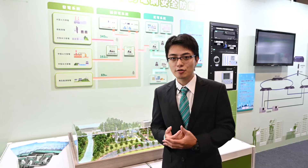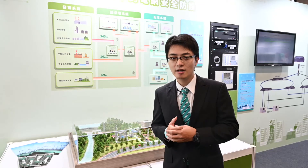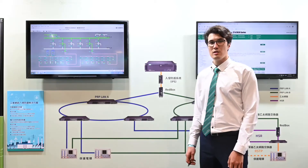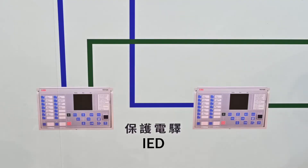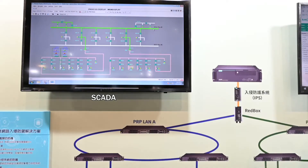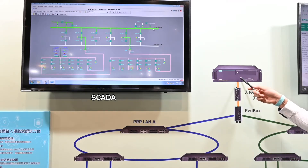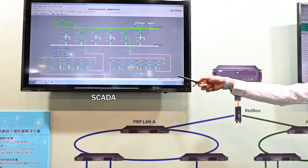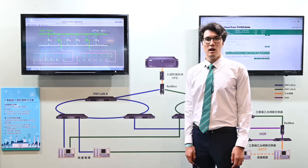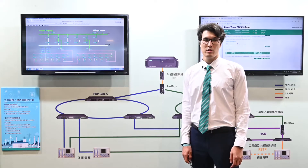Next, we want to show you the possible attack scenarios to substations and the countermeasures we could take to prevent them. This is a simplified substation network architecture. The key component here is the intelligent electronic device (IED). Its job is to protect the primary equipment and power grid from damage caused by voltage, current, or frequency anomalies. Modern IEDs are connected via Ethernet networks to each other as well as to the SCADA system, which is a human-machine interface for operators to control the entire facility. These two components — IED and SCADA — are the most critical and could be the primary cyber attack targets.